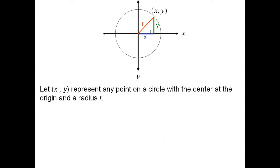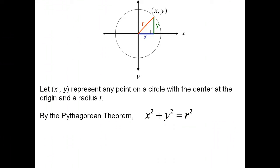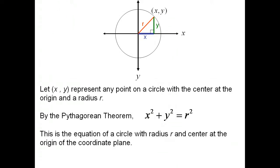Let xy represent any point on a circle with the center at the origin and a radius of r, as you can see above. By the Pythagorean Theorem, if the point on the circle is xy, then one side is x long and the other is y long, so x squared plus y squared equals r squared. This is the equation of a circle with radius r centered at the origin of the coordinate plane.